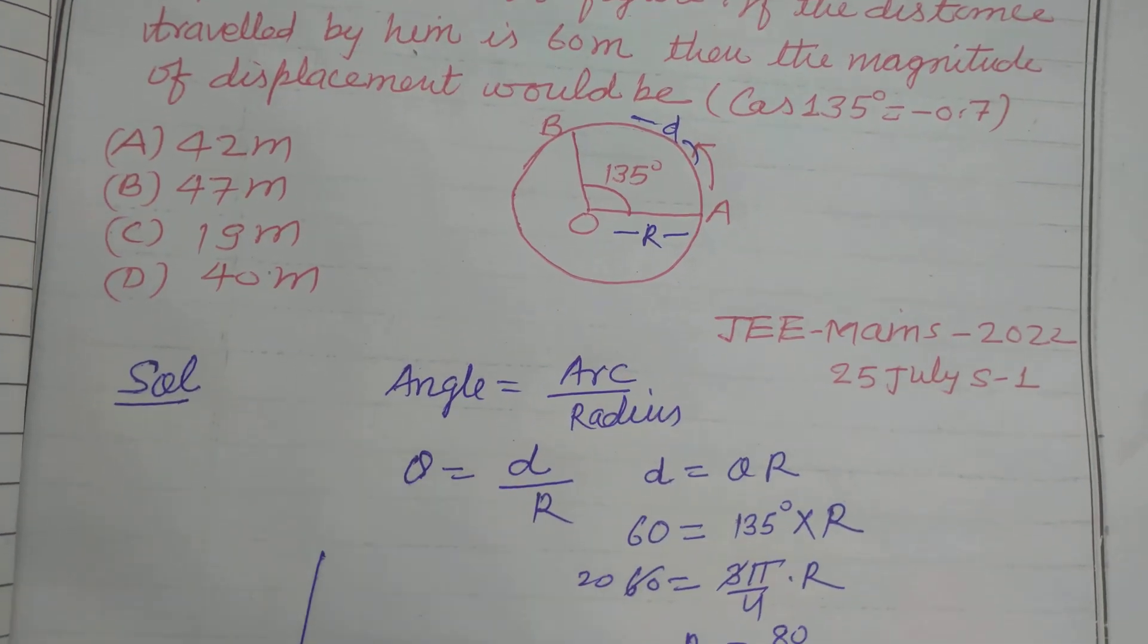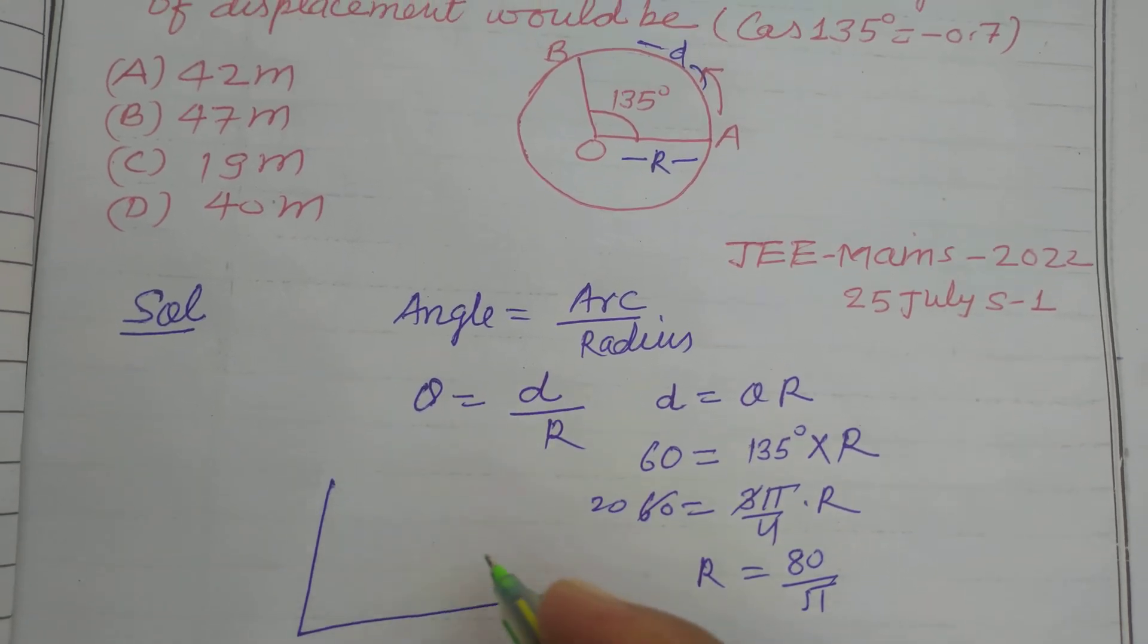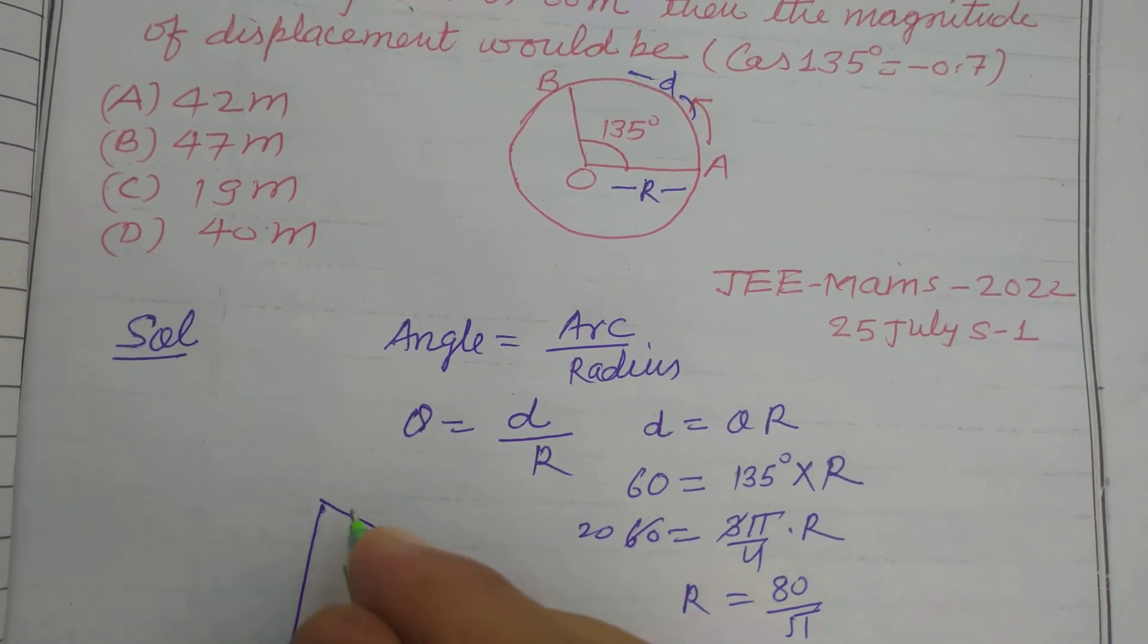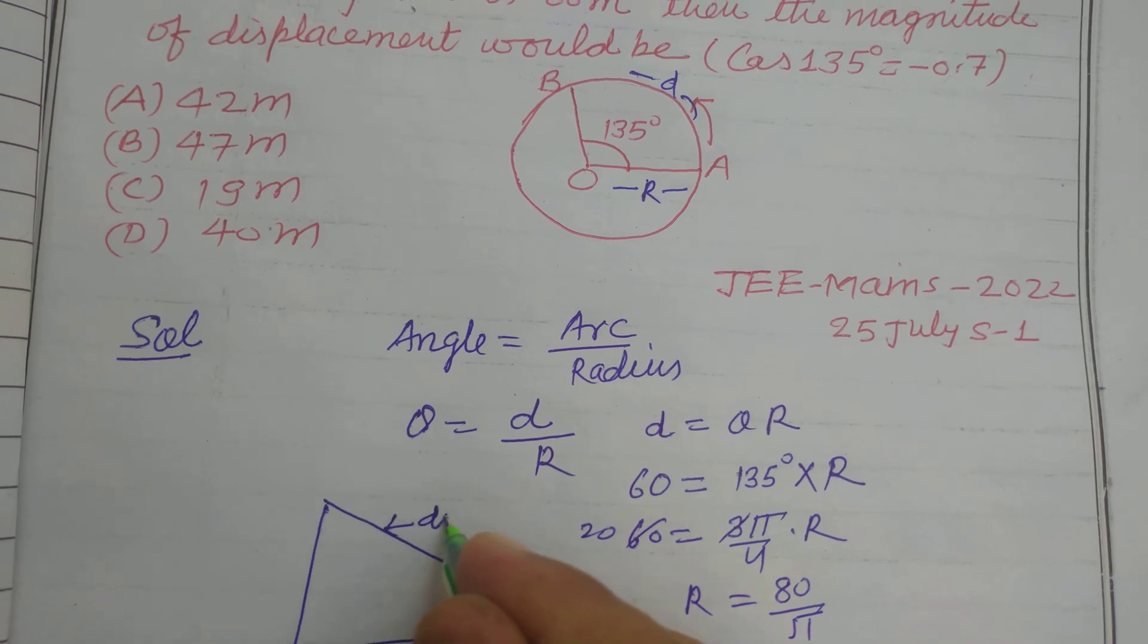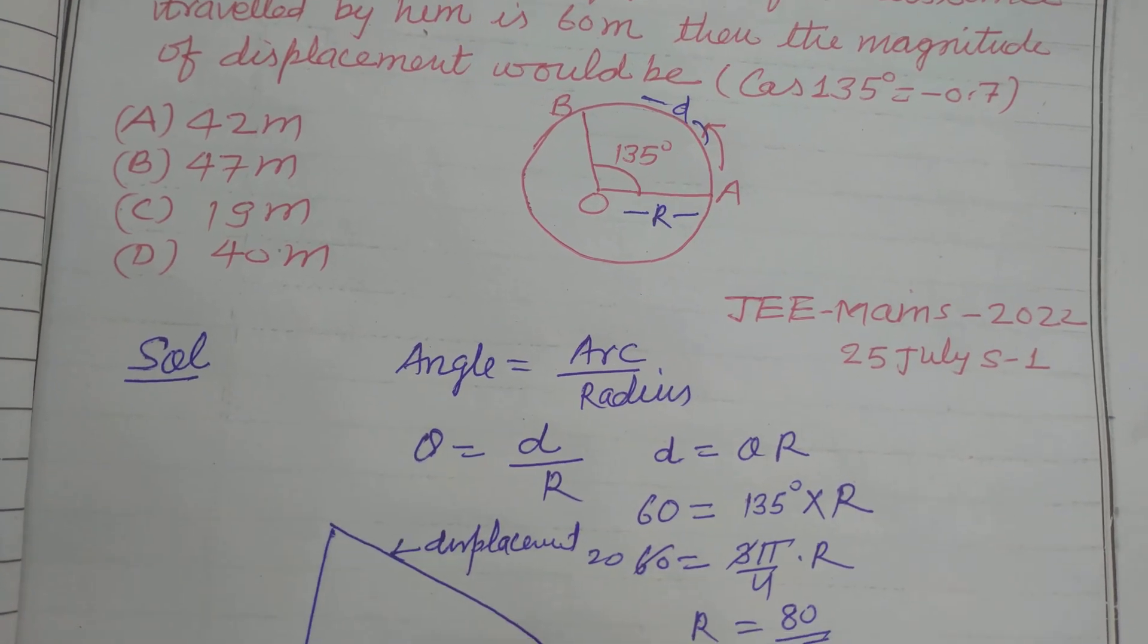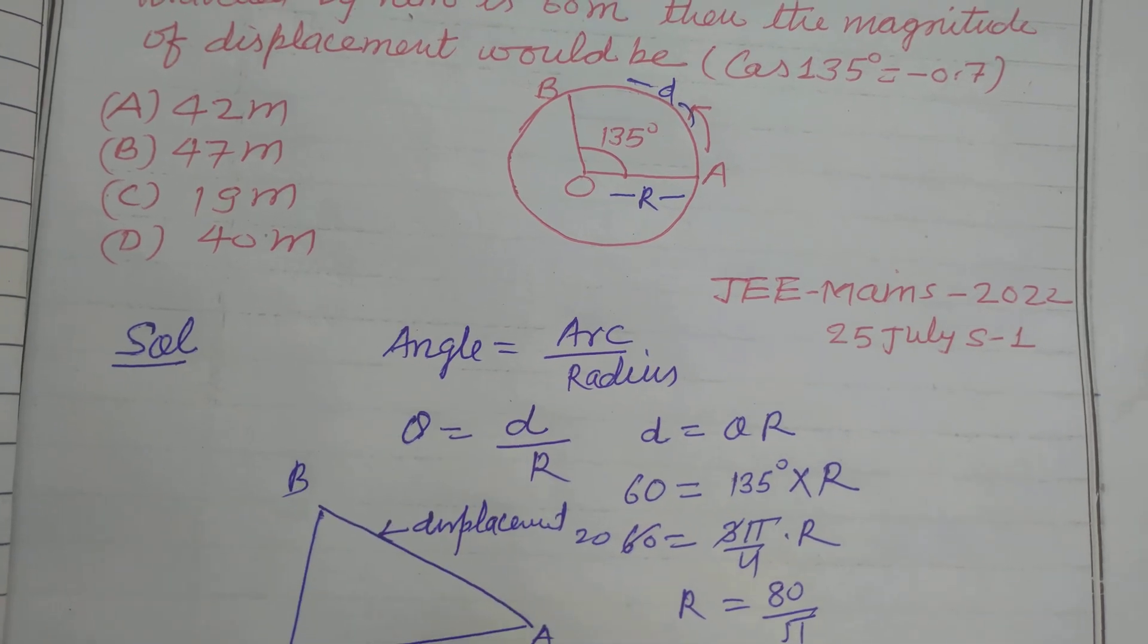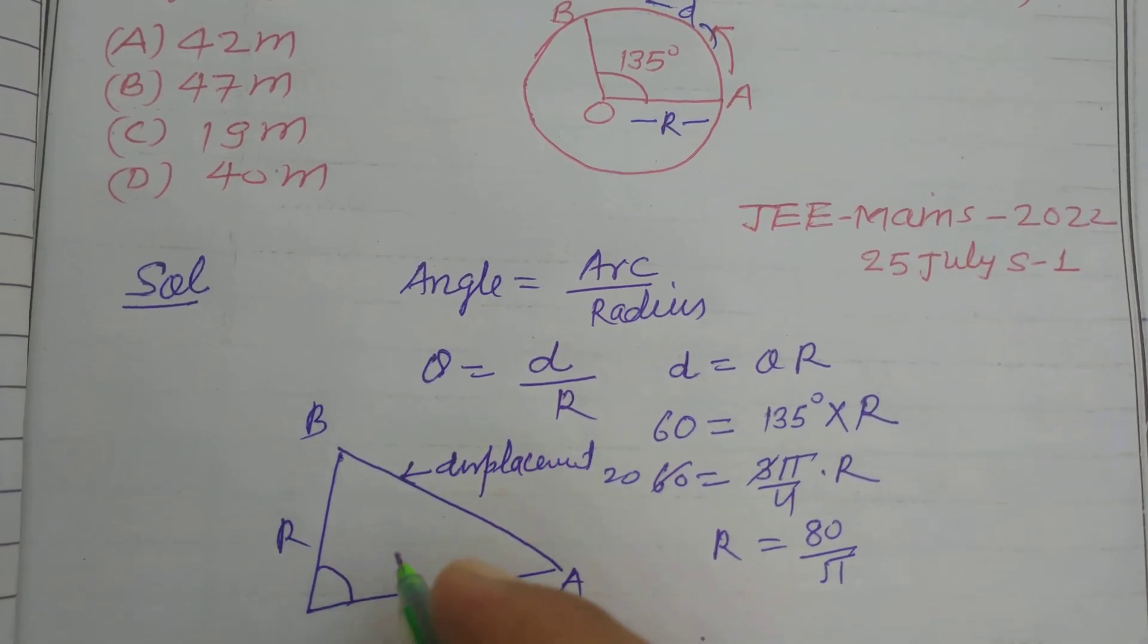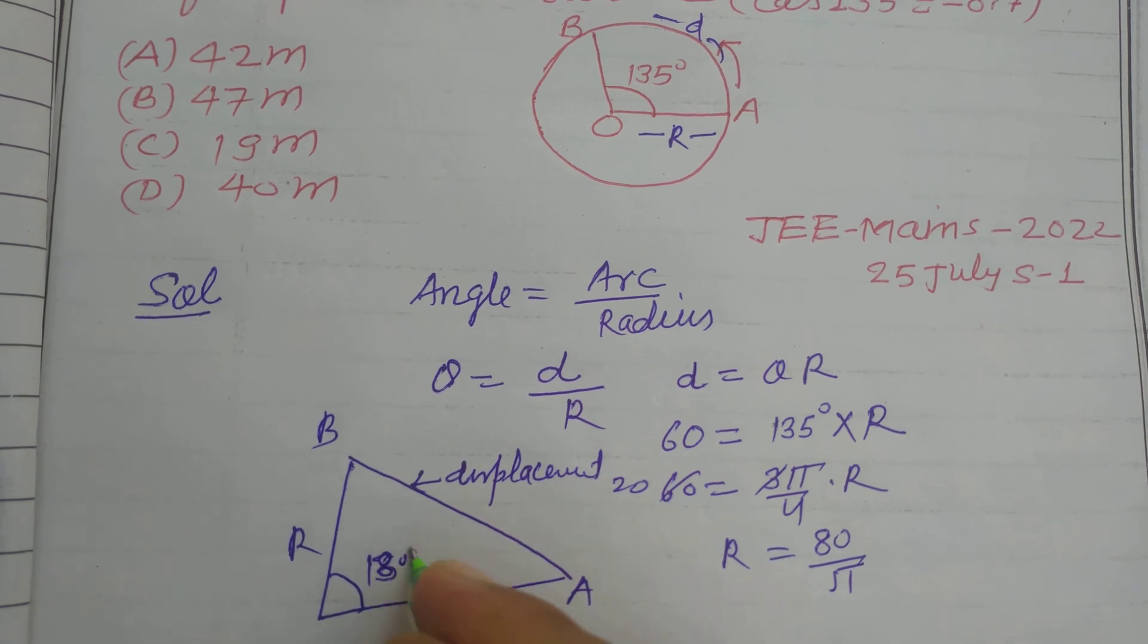Now this triangle form gives the displacement. This is displacement from A to B. And this is R, this is also R and angle is 180, sorry, 135.